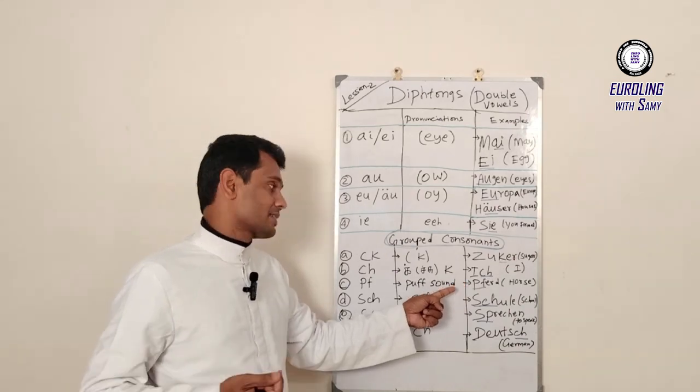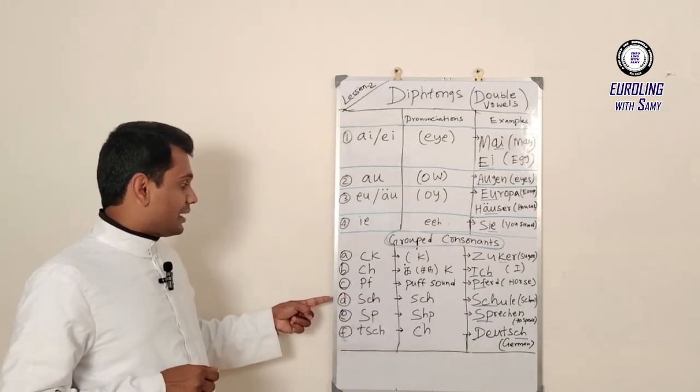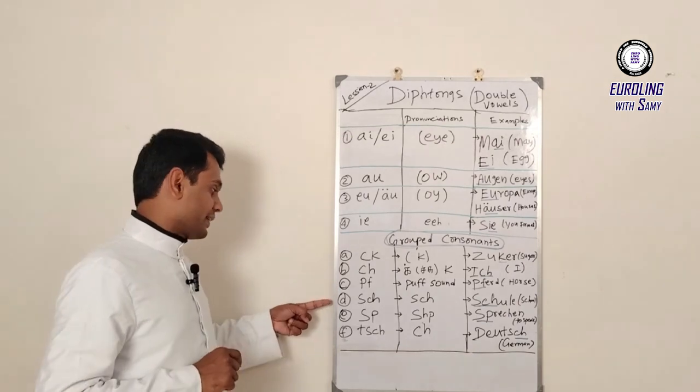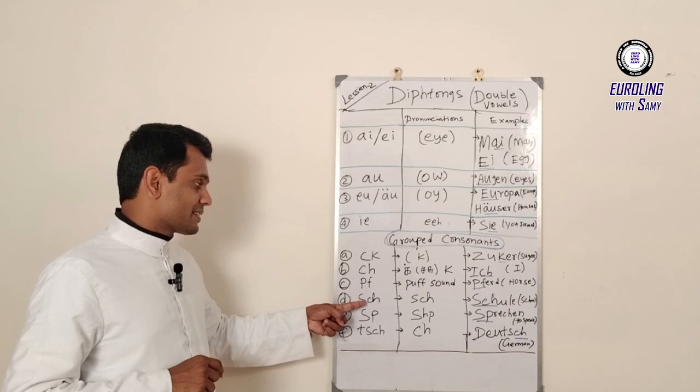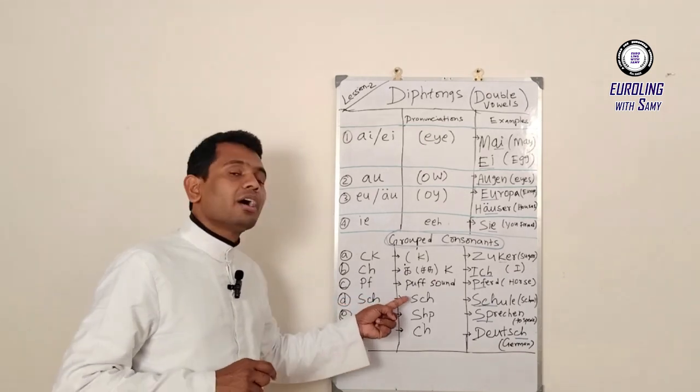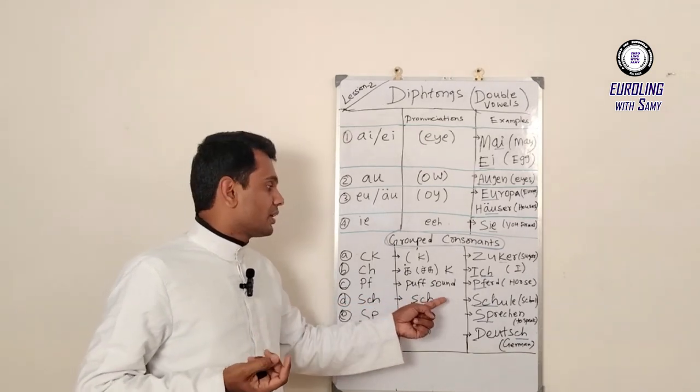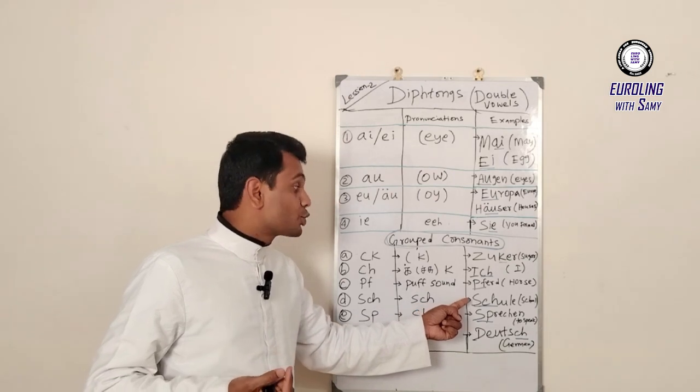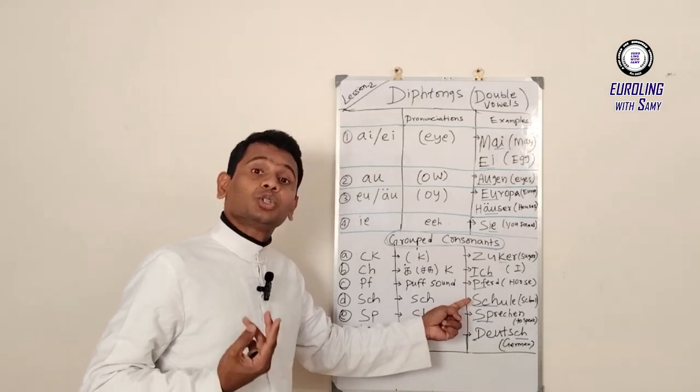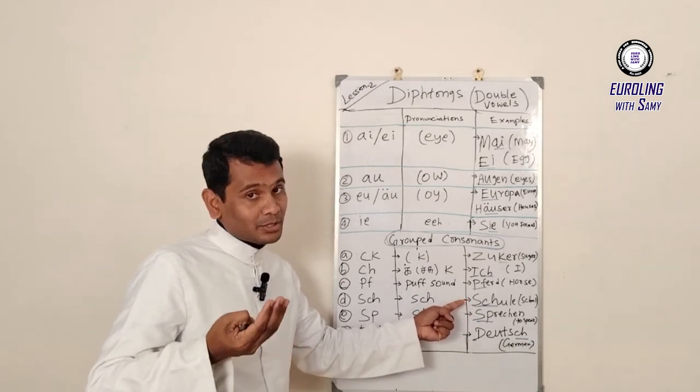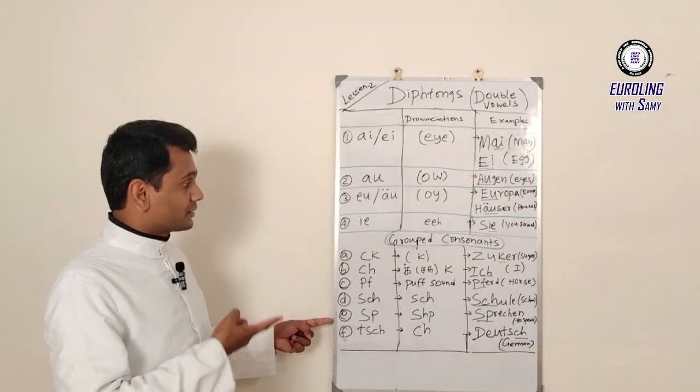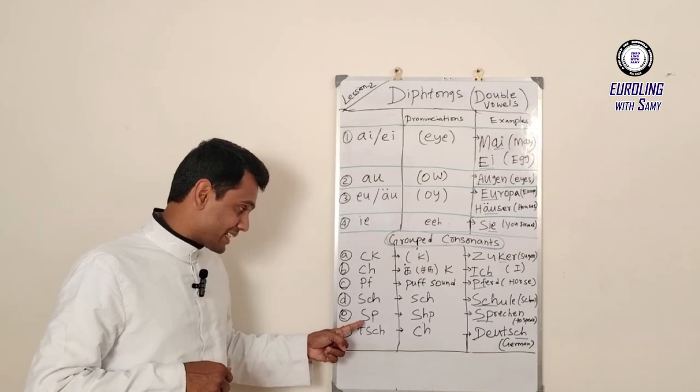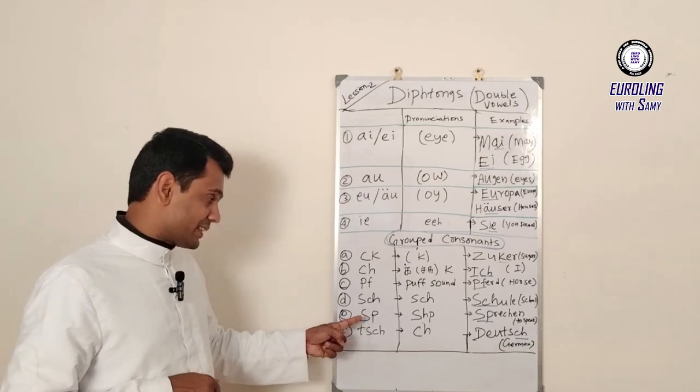Another example for grouped consonants is S-C-H. For example, SCHULE. SCHULE, that means the school.